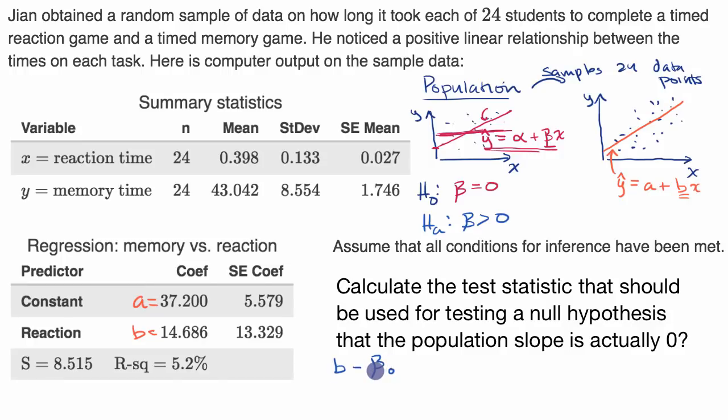Then divide by the standard deviation of the sampling distribution of the slope of the regression line. And if you did this, it would be appropriate to use a z statistic.